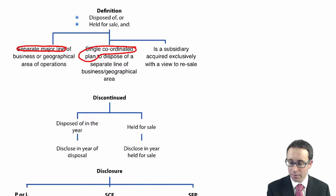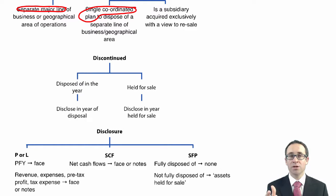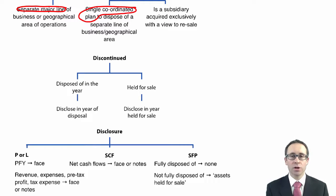When does the operation become discontinued? If it's disposed of in the year you will disclose it as a discontinued operation in that year, but we are trying to encourage earlier disclosure. Before the actual disposal takes place you may have decided to hold that operation for sale. So in one accounting period it could be disclosed as a discontinued operation because it is held for sale, and then in the subsequent period when it is disposed of, it will also be separately disclosed. Under the old rules we only showed a discontinued operation when it had physically been disposed of or closed down.